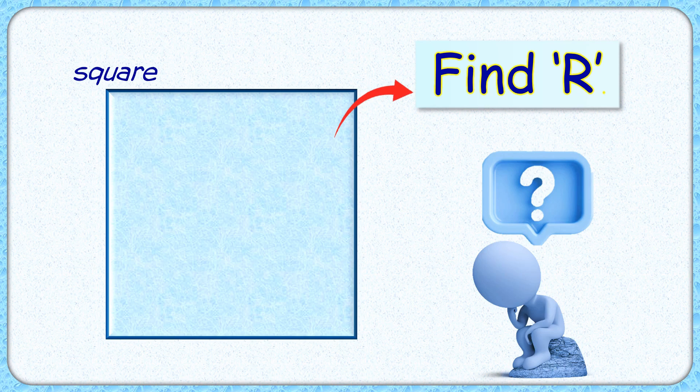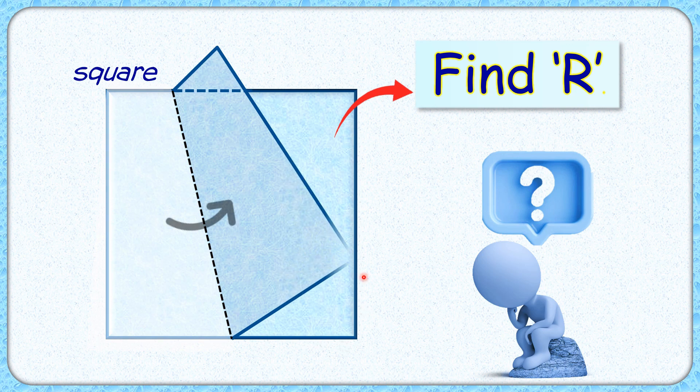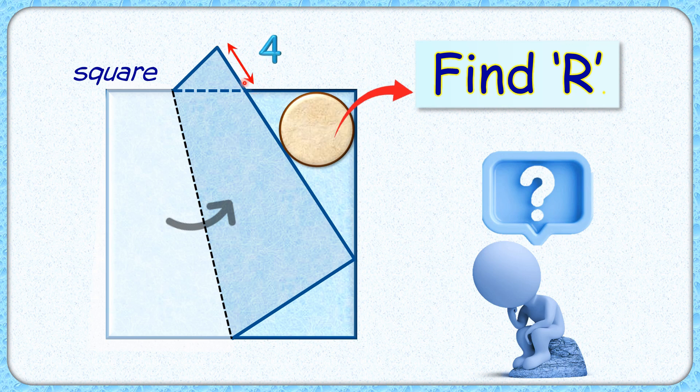In this interesting question, given is a square with a vertical line drawn randomly across. This square is folded in the triangle formed. We are inscribing a circle with radius r centimeter. This length outside the square is 4 centimeter. Using this limited data, we have to find the radius of this inscribed circle.